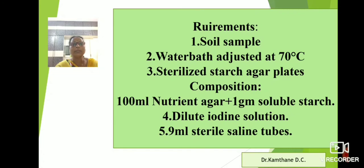Nutrient agar is prepared by taking peptone 1 gram, meat extract or beef extract 0.3 gram, sodium chloride 0.5 gram, distilled water 100 ml. pH is adjusted at 7.4 with the help of 0.1 normal NaOH and 0.1 normal HCl. To this 1 gram soluble starch is added and this is autoclaved.